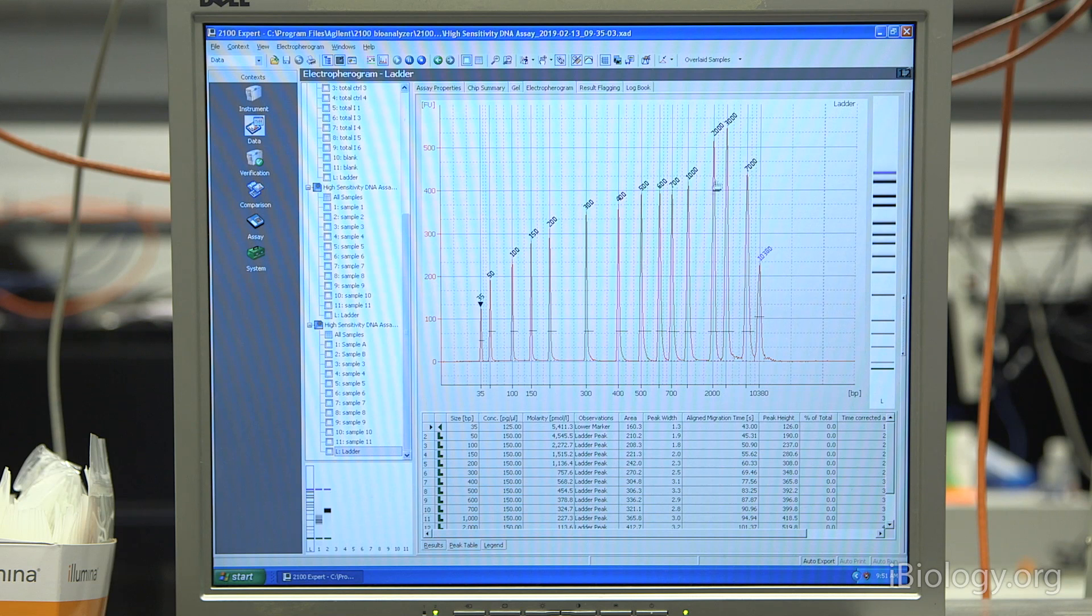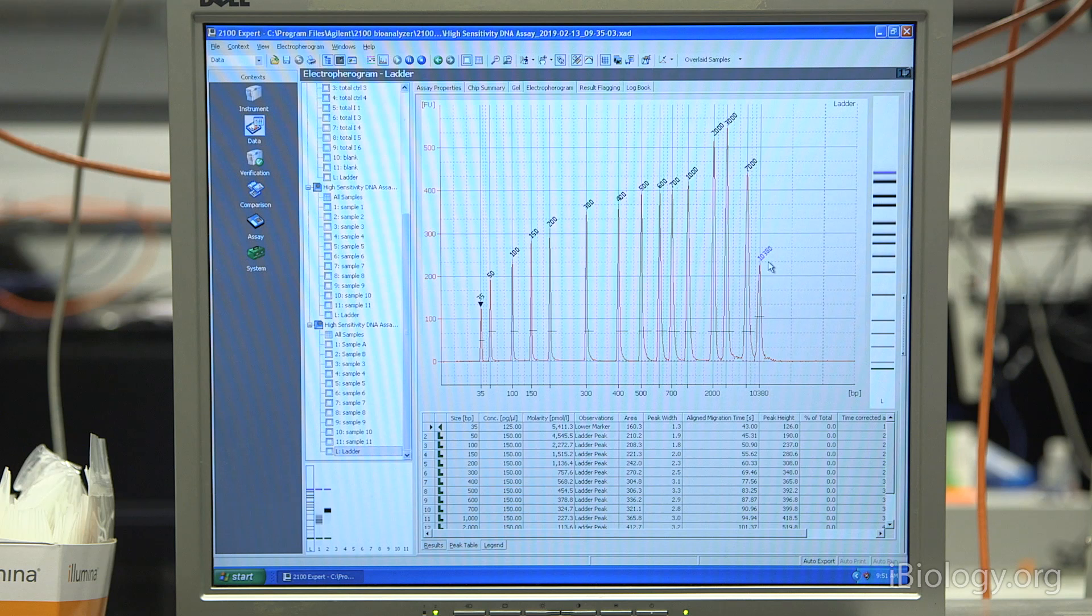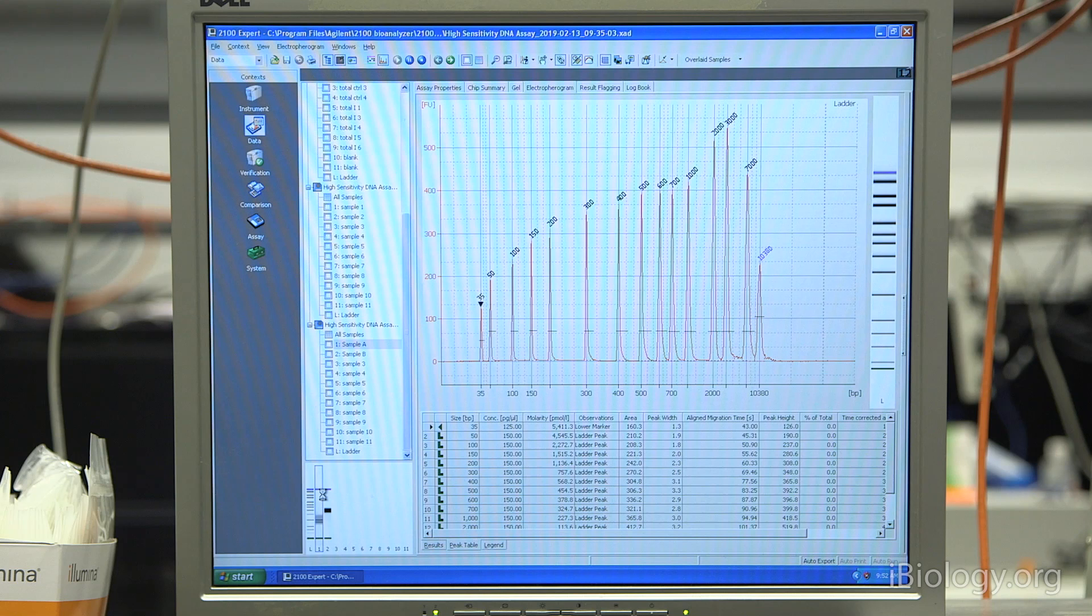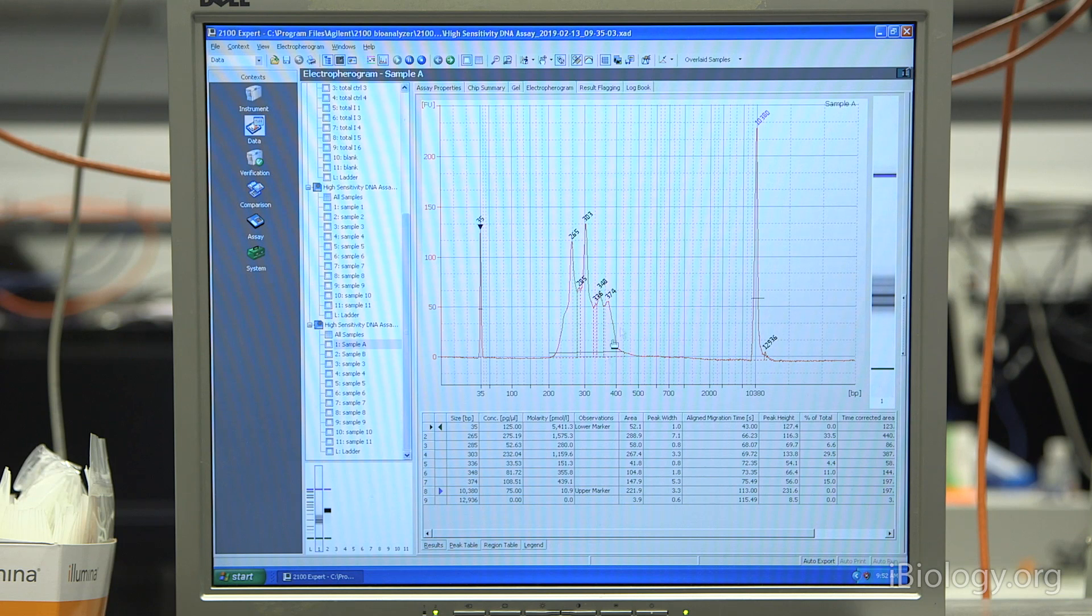If we click on the ladder, it has a series of peaks that are present in that ladder sample. The ladder also contains the marker that we added, the 5 microliter reagent. Those are this 35 base pair and roughly 10 KB base pair fragments that are present in all samples. The ladder is used as a reference because we know the sizes, and we correlate it with the time that it takes for those samples to come through the chip. We have these internal references that we'll use compared to each of the samples. Now if we click on sample A, it'll also have that 35 and 10 KB marker that are used to generate the sizing of these samples.